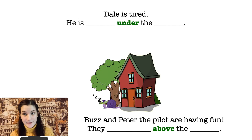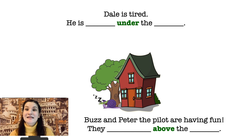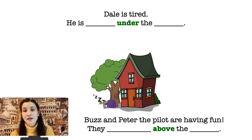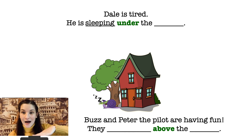Now look at this picture. Who can you see in the picture? We don't have cats here anymore. You can see a snail. Do you remember his name? His name is Dale. Let's read a sentence about Dale. Dale is tired. What is he doing? He is sleeping. And now let's say where he is sleeping. He is sleeping under the tree.